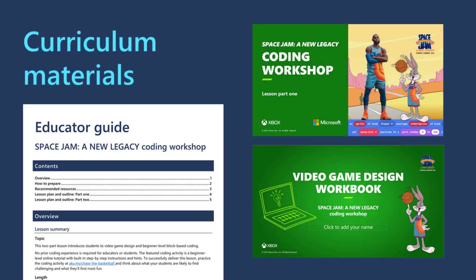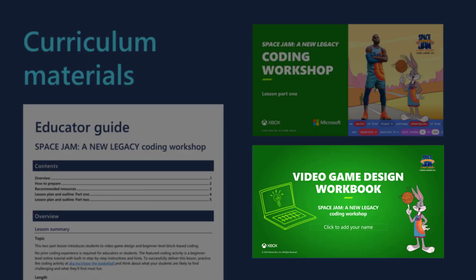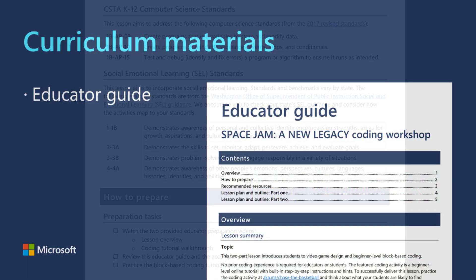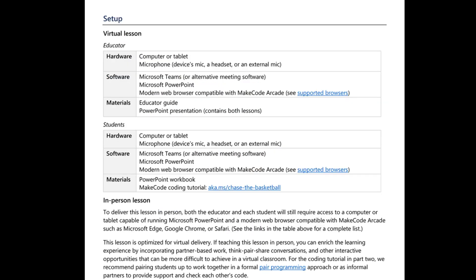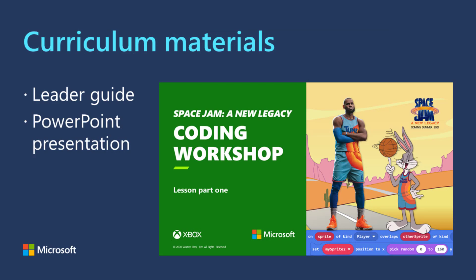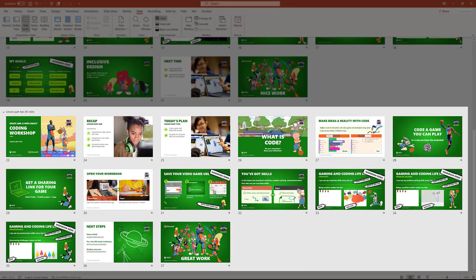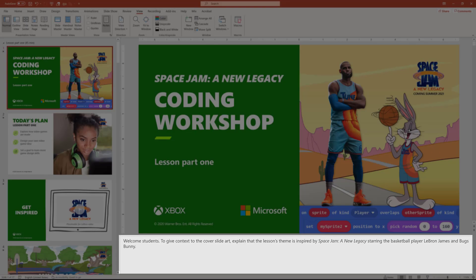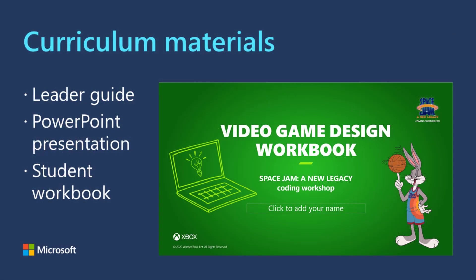In addition to the two preparation videos, the curriculum materials include an educator guide, a PowerPoint presentation, and a student workbook. The educator guide includes details about the lesson, including the computer science and social-emotional learning standards it aims to address, setup requirements, recommended resources, and lesson outlines with suggested timings. The PowerPoint presentation is a visual tool to guide students through the activities — both parts of the lesson are included in the same PowerPoint, divided into two sections, with tips included in the slide notes. The student workbook is an interactive PowerPoint workbook for students to use during the lesson activities, and the activities can also be done on paper if students can't access or prefer not to use the workbook.